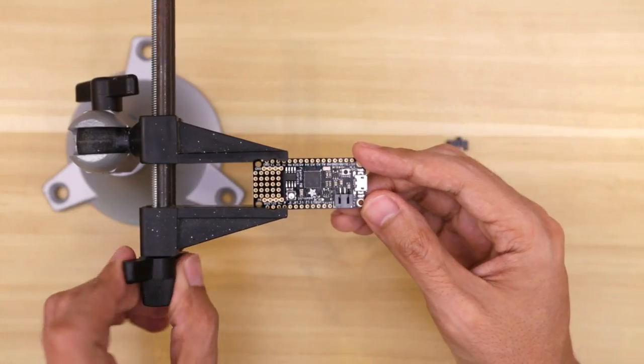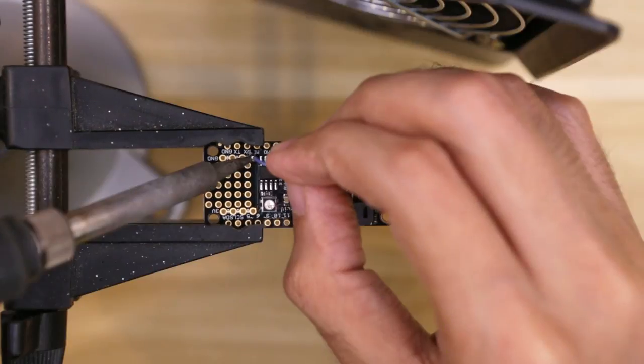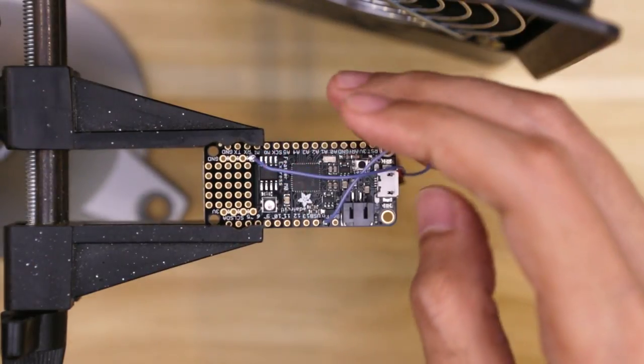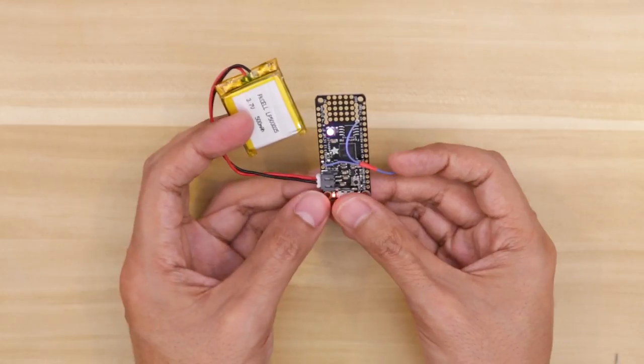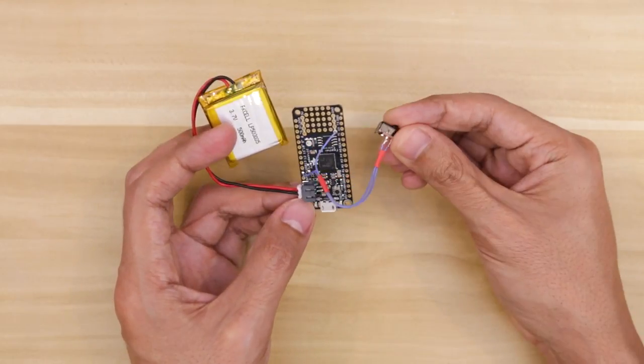I'll secure the PCB to a pan of ice and connect one of the switch wires to a ground pin and the other to the enable pin. We can quickly test out the switch by connecting the battery and seeing if we can turn it on and off.